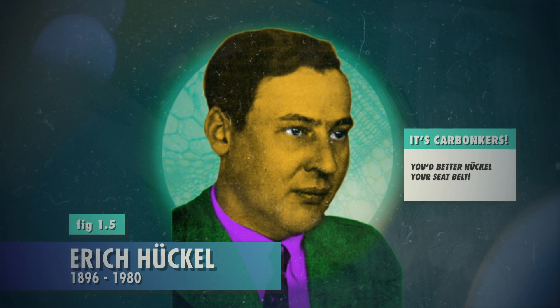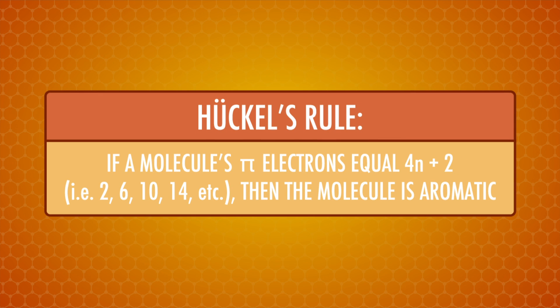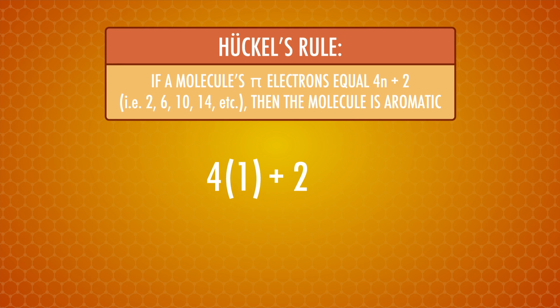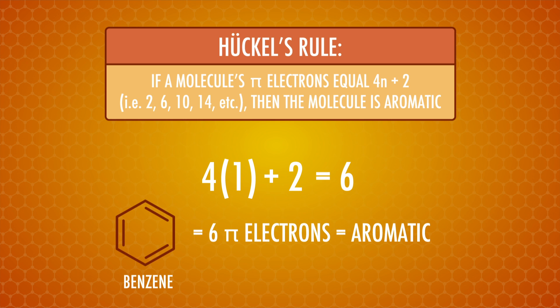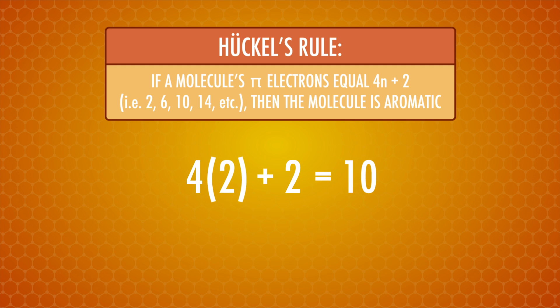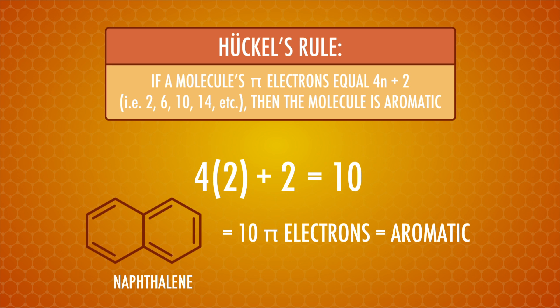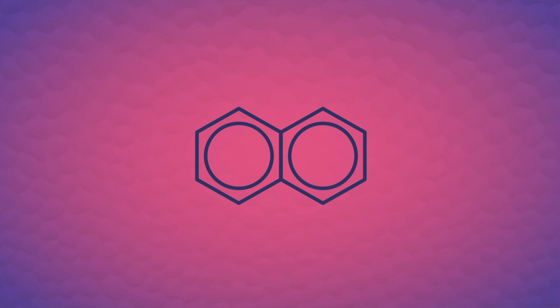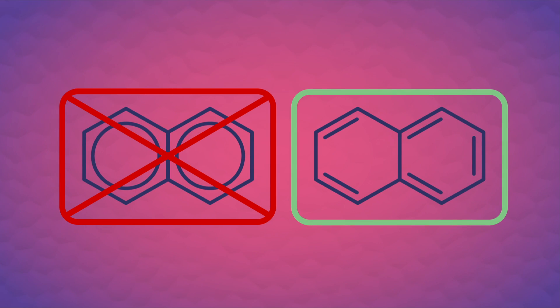Huckel's rule is named after German chemist and physicist Erich Huckel, who noticed that if the number of pi electrons in a compound equals 4n plus 2, where n is an integer, then the compound is aromatic. For example, if n equals 1, then 4 times 1 plus 2 equals 6 pi electrons — benzene has 6 pi electrons and it's aromatic. If n equals 2, we get 4 times 2 plus 2 equals 10 pi electrons, which works for naphthalene, which is also aromatic. By the way, when drawing polycyclics like naphthalene, it's better to use the alternating bonds model rather than circles in the middle of each ring.